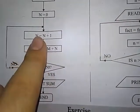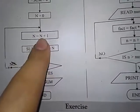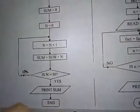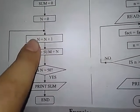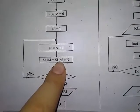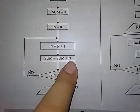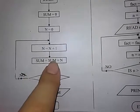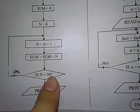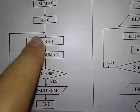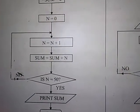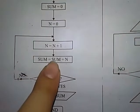Loop دوبارہ چلے گا: n = 1 + 1 = 2 (اگلا natural number)، اور sum = 1 + 2 = 3۔ پھر condition چیک: n = 2، ابھی 50 نہیں آیا، دوبارہ 'no'۔ اگلی iteration میں n = 3، sum = 3 + 3 = 6۔ پھر دوبارہ condition check — n = 3، ابھی 50 سے چھوٹا ہے۔